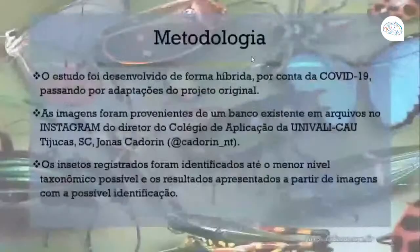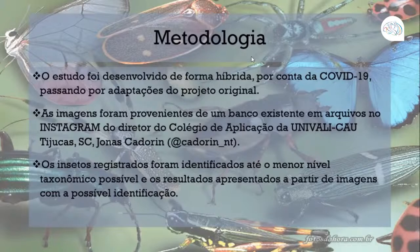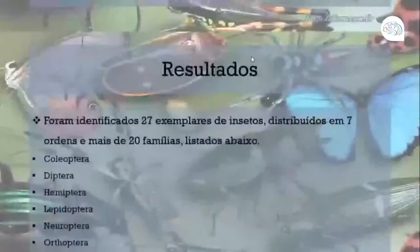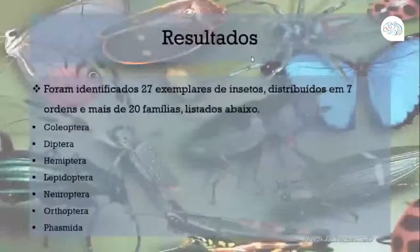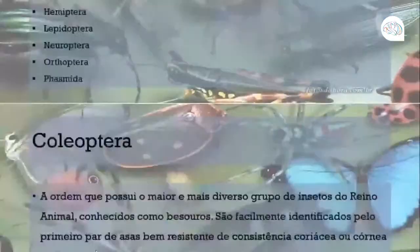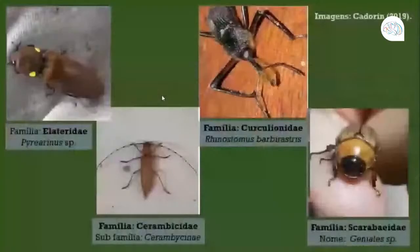Por conta da Covid-19, o estudo foi desenvolvido de forma híbrida, passando por adaptações do projeto original. As imagens foram provenientes de um banco existente no Instagram do diretor do Colégio de Aplicação Univale, Jonas Cadorim. Os insetos foram identificados até o menor nível taxonômico possível. Consegui identificar 27 exemplares distribuídos em 7 ordens e mais de 20 famílias. A primeira é Coleoptera — a ordem mais diversa do reino animal, conhecida como besouros, facilmente identificados pelo primeiro par de asas resistentes. Temos quatro exemplares dessa ordem com suas famílias e nomes científicos.